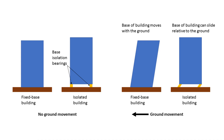This happens because the markers function similarly to a base isolation system in a real building that isolates the movement of the building from the movement of the ground, allowing the ground to slide back and forth under the building during an earthquake.